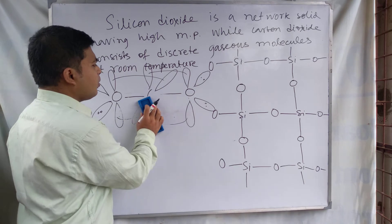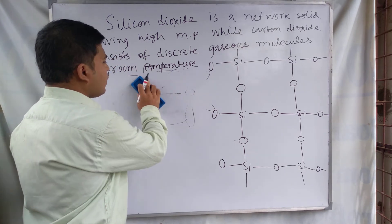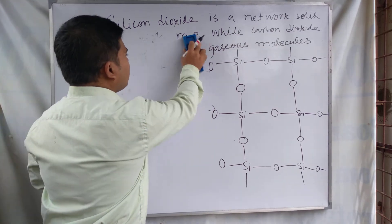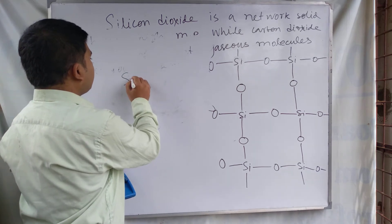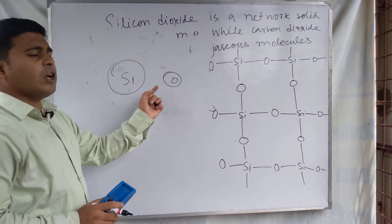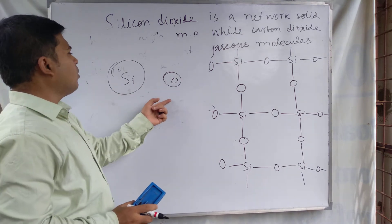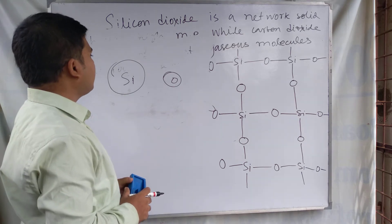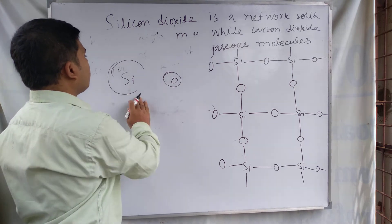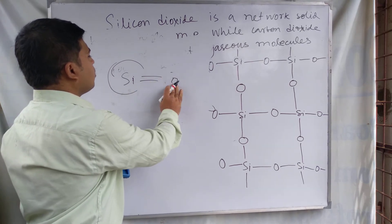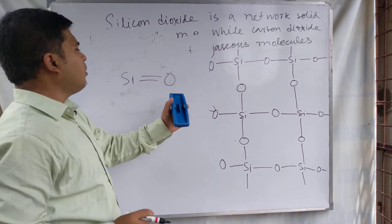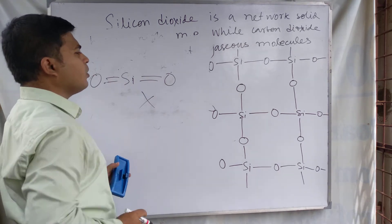Carbon dioxide is formed by the lateral overlap of the p orbitals of oxygen and carbon. But in the case of silicon dioxide, the silicon atom is larger in size and the oxygen atom is small, so this type of pi bonding is not possible for silicon oxide. As a result, the silicon–oxygen double bond is not possible — this structure cannot form.